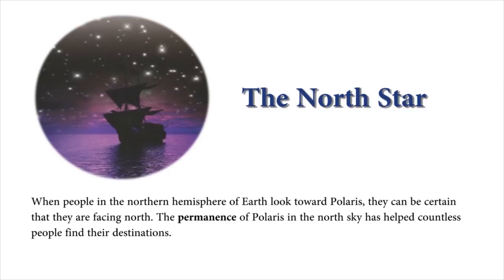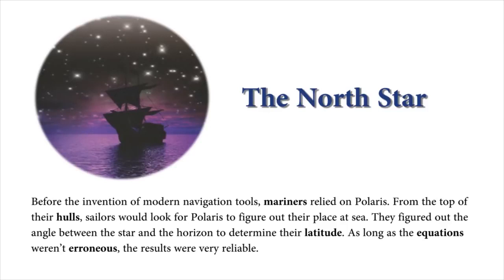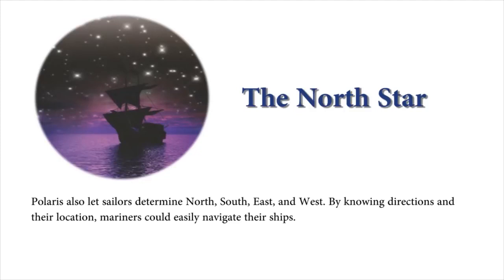The permanence of Polaris in the North Sky has helped countless people find their destinations. Before the invention of modern navigation tools, mariners relied on Polaris. From the top of their hulls, sailors would look for Polaris to figure out their place at sea. They figured out the angle between the star and the horizon to determine their latitude. As long as the equations weren't erroneous, the results were very reliable. Polaris also let sailors determine north, south, east, and west.